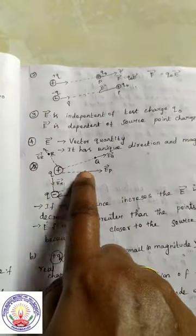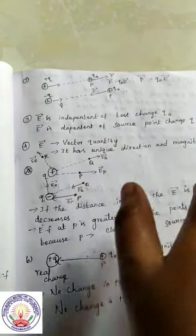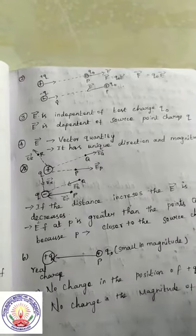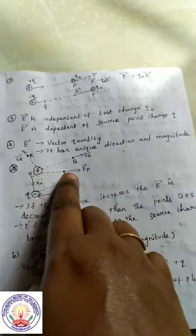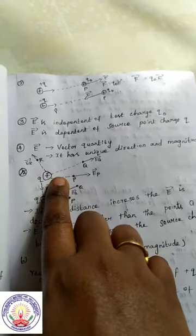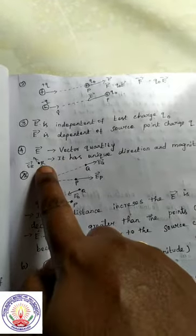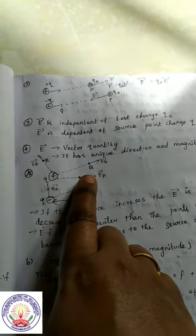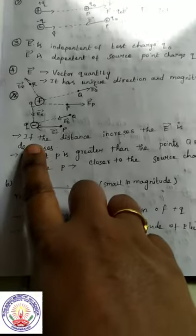Let us consider three different points. The length of the electric field vector is considered at three different points. The strength or magnitude of electric field at the points P, Q, R — P is stronger than Q and R because P is closer to the source charge. So Q is the source charge and Q0 is the test charge. P is the strongest field compared to Q and R because P is closer to the source charge.